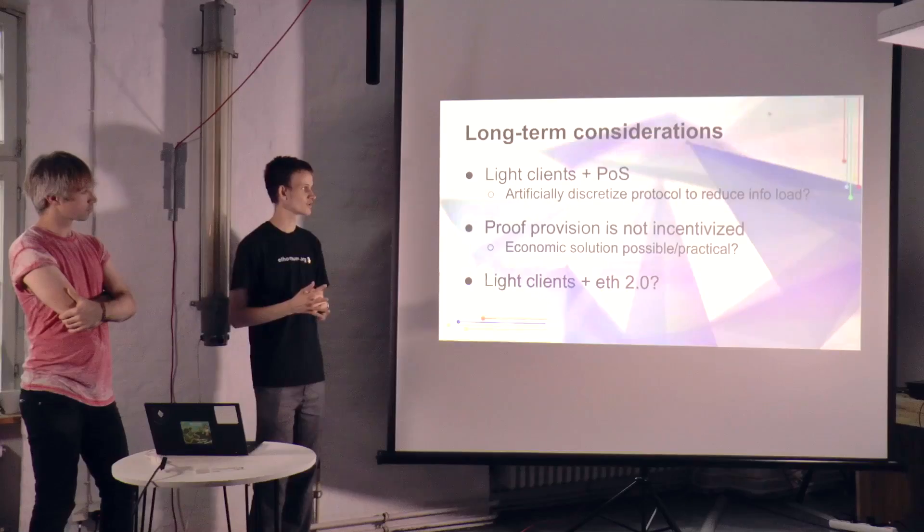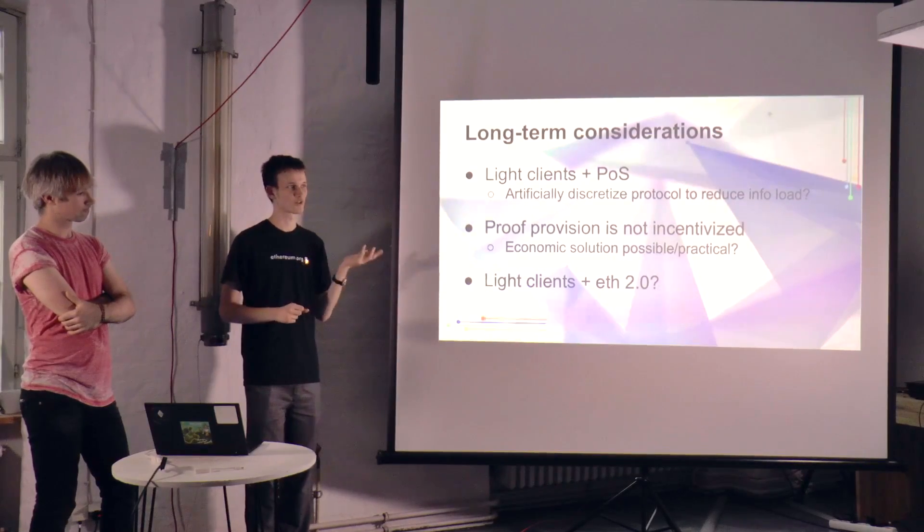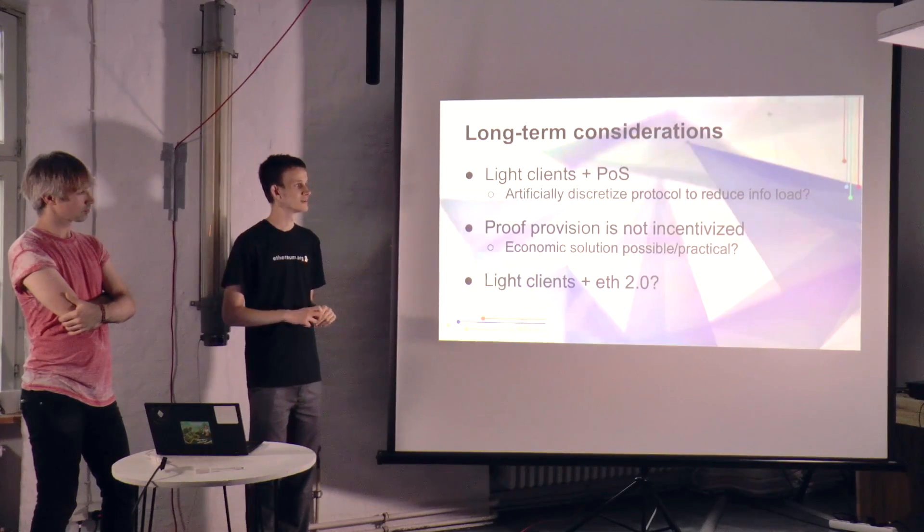So long term: lite clients and proof of stake. It's obviously going to have more info load than proof of work, because with proof of stake you actually need to validate that people have stake. There's the option of artificially discretizing the protocol — you would have checkpoints that are far away from each other, and each checkpoint would be signed by a very large number of nodes, so you would see that a very large set of signers has validated the next checkpoint. Proof provision is not well incentivized yet — the tit-for-tat protocol sort of does it, putting it on a DHT sort of solves the problem, but whether we'll need some better solution is hard to say. Light clients in Ethereum 2.0 depends entirely on what Ethereum 2.0 is going to look like.